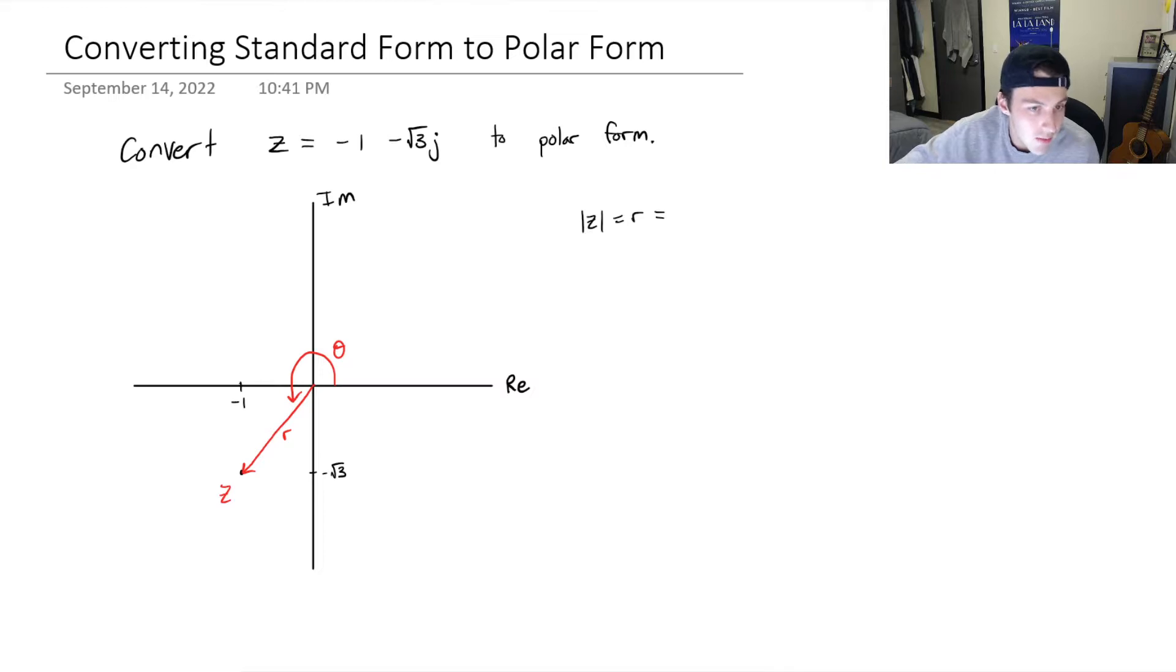This one is relatively easy. If you're not super familiar with your special triangles or if you're given some weird units for the x and y coordinates, you could just use Pythagorean theorem. It's a right-angled triangle. So if you use Pythagorean theorem, you would have negative 1 squared plus negative root 3 squared. This is the square root of 1 plus 3. 1 plus 3 is 4, square root of 4 is 2. So the length of this vector will be 2.